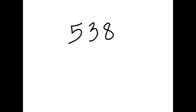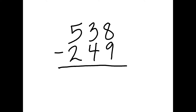Let's try a different one. Now we have 538 take away 249. I have everything stacked up — ones, tens, and hundreds. I'm going to start on the right and do my ones first. 8 take away 9 — I have more on the floor than I do on top, so I need to go next door and grab a 10. My 3 becomes 2, and I bring that 10 over to the 8, so my 8 becomes 18. 18 take away 9 is 9.